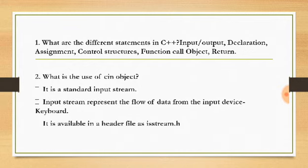What are the different types of C++ statements? Input and output statement, declaration statement, assignment, control statement, function call, object and return statement.